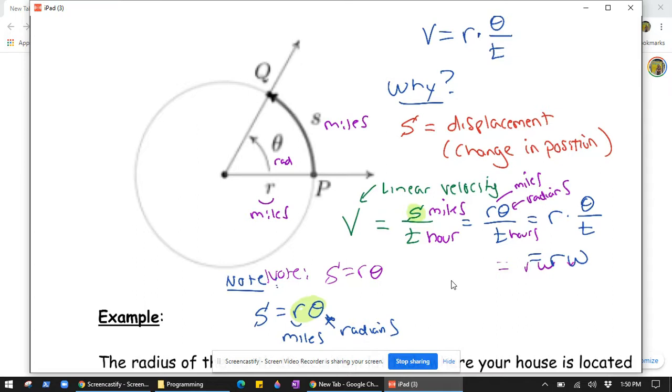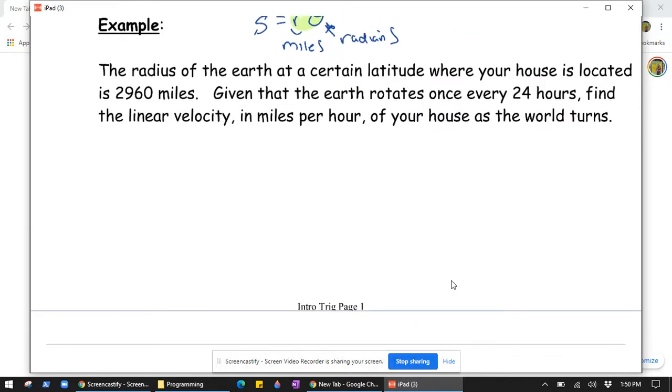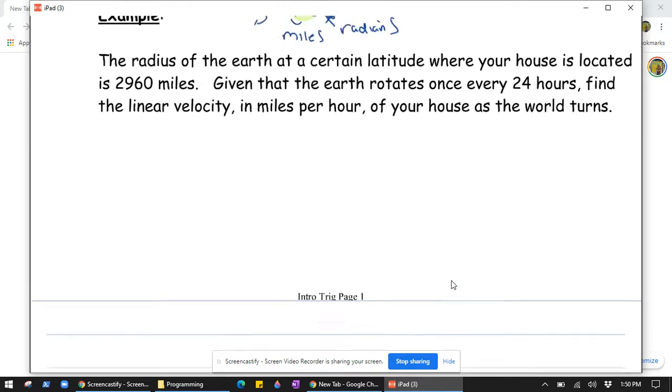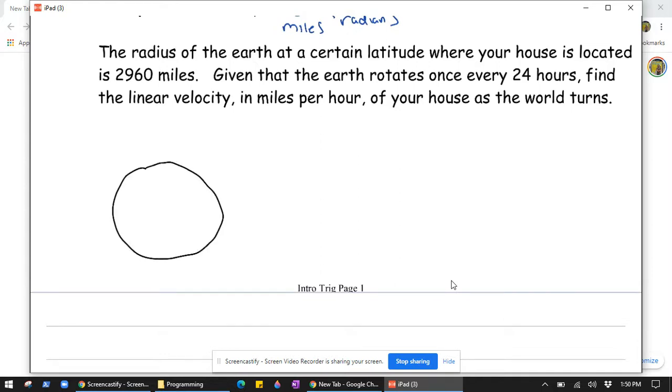Let's do an example here. This says the radius of the earth at a certain latitude where your house is located is 2960 miles. Given that the earth rotates once every 24 hours, find the linear velocity in miles per hour of your house as the world turns. Let's first start with a picture. Let's just say this is the earth, and we know that the earth has a radius of 2960 miles. It's rotating, and we know that it rotates once - it does one revolution every 24 hours.